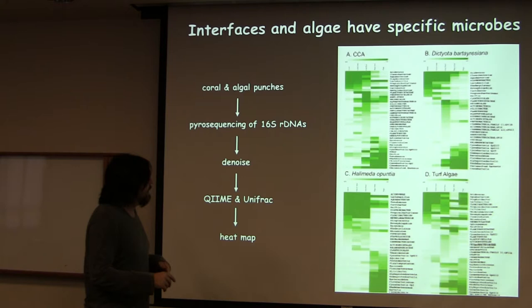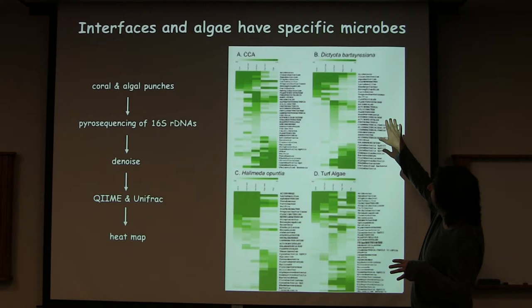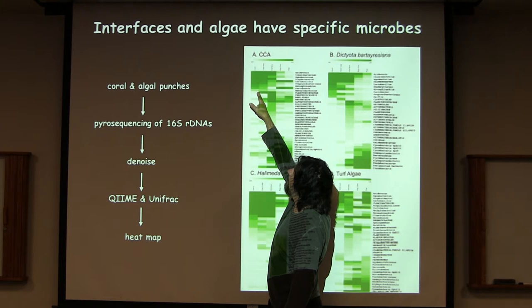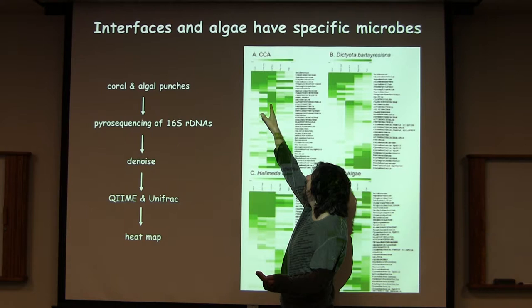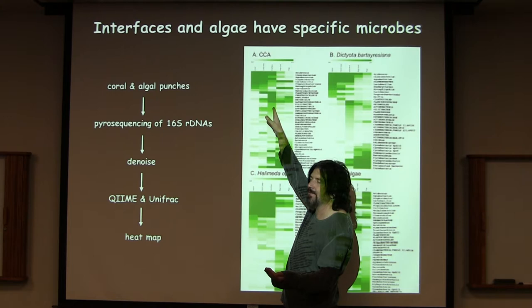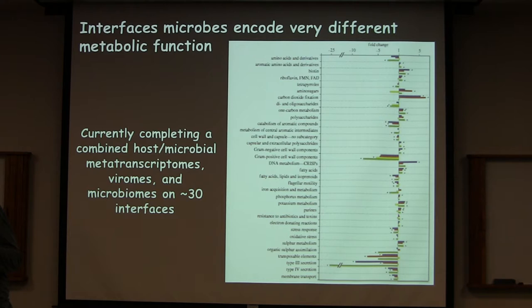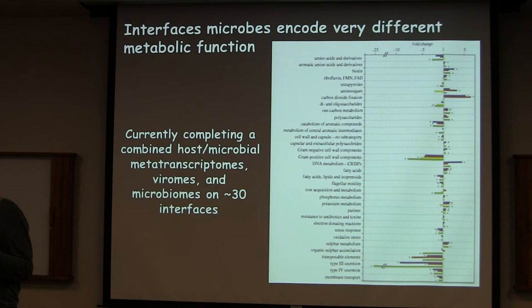Now where we're going, and where things are getting interesting again with the 16S analysis, is basically this study here. That's the same setup where we've got the different algal types next to the same coral type. If you do 16S analysis, you see there's basically a characteristic coral-associated microbial community, and then there's a characteristic algal-associated community. But between them, there's actually a completely different community — it's not just a mixture of those two things. There's something specific there. And if you predict what those things are doing, you see increases in bacteria that may be bad for the coral.